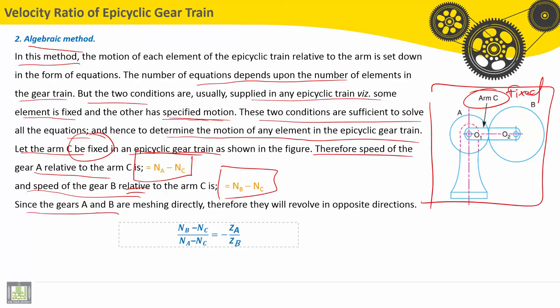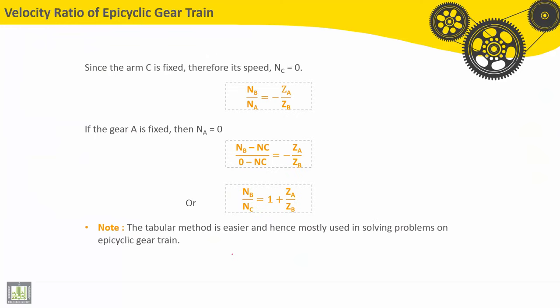Since the gears A and B are meshing directly, therefore they will revolve in opposite directions. So NB minus NC divided by NA minus NC should be equal to minus ZA divided by ZB.